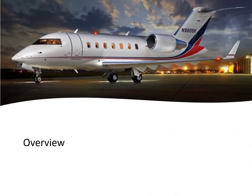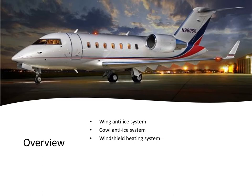We're going to look at the anti-ice system - the ice and rain protection system. That system comprises several subsystems: a wing anti-ice system using hot air from the engines, a cowl anti-ice system also using hot air from the engines, a windshield heating system that heats both the main screen and side screens electrically, an air data sensor heating system for the pitot probes, and an ice detection system to alert the crew when in icing conditions and allow them to switch everything on.